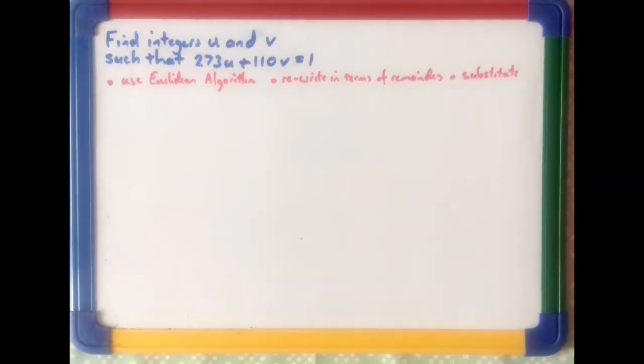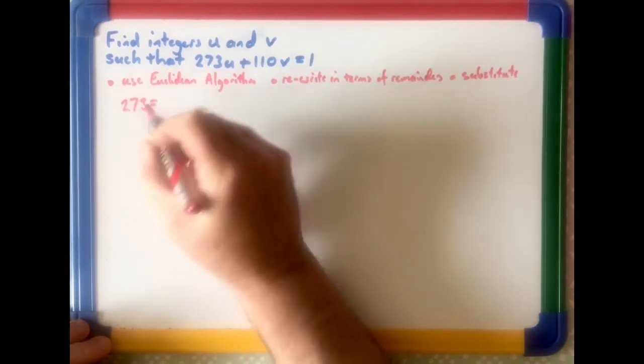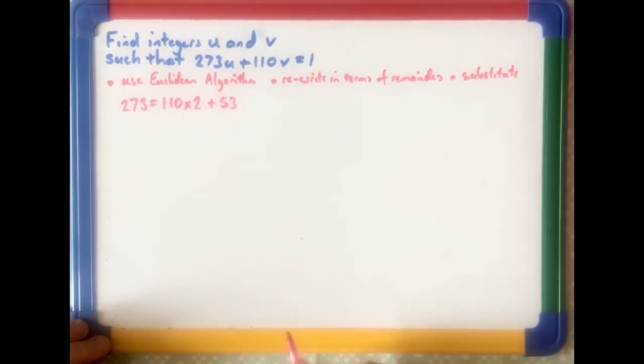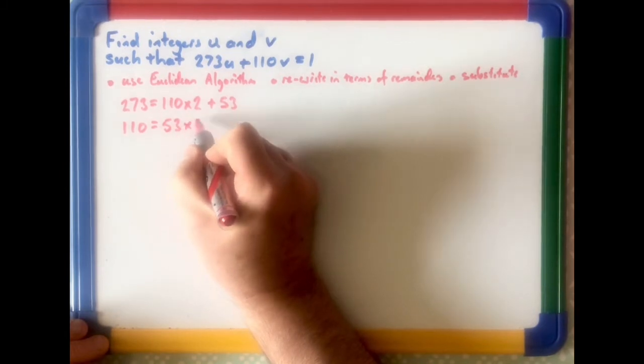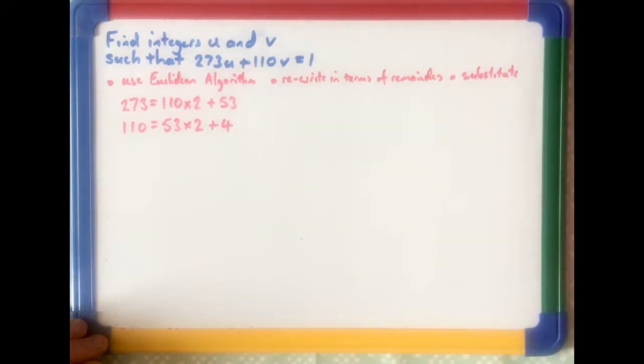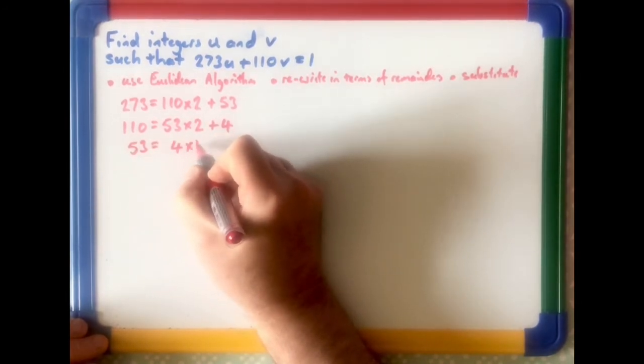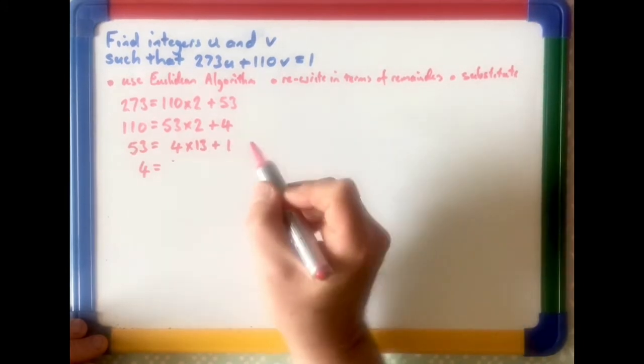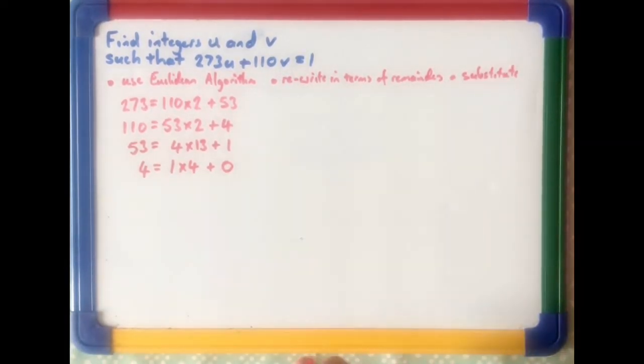So let's go through that one step at a time. We start off 273 equals 110 times 2 plus 53. Next step, you do 110 equals 53 times 2 plus 4. Remember, we did this one last time. And then we've got 53 equals 4 times 13 plus 1. And lastly, we had 4 equals 1 times 4 plus 0. This would give us a greatest common divisor of 1.